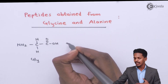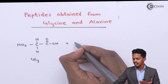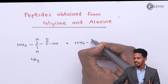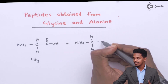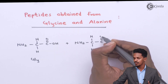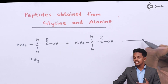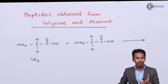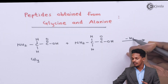Suppose if it is combined with another molecule of glycine — that is NH2, CH2, C double bond O, OH — and suppose if it has to form a peptide linkage, so in that case we will obtain a dipeptide.